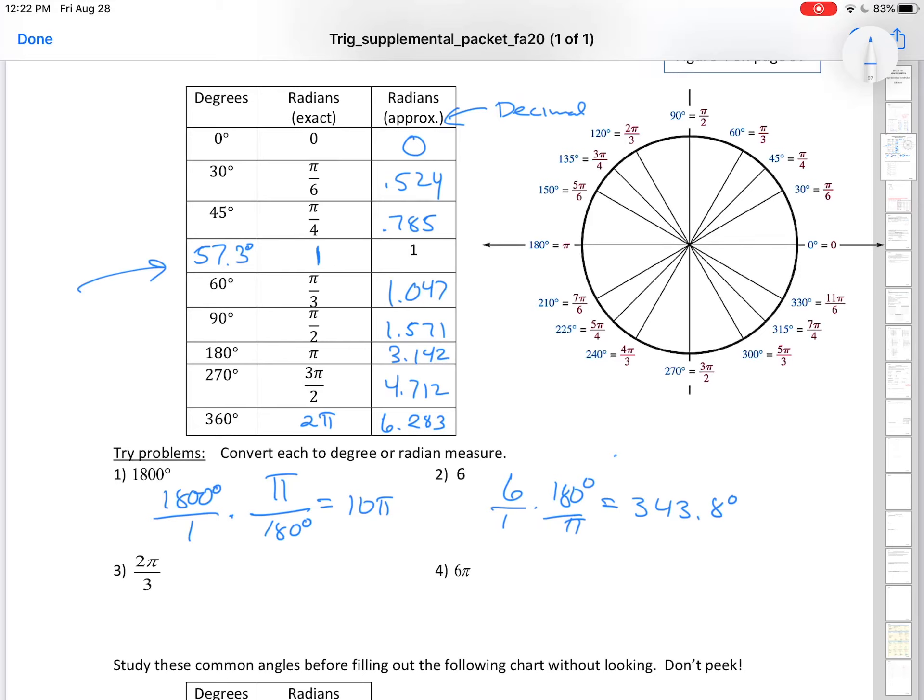Here to convert from radians to degrees, because it has a π, we can just replace it with 180, and look at 2 times 180 divided by 3, and you'll get 210 degrees, a third quadrant angle. And 6π would just be 6 times 180 degrees, or 1080 degrees. There's going to be a lot of conversion back and forth. We just want you to have some familiarity.